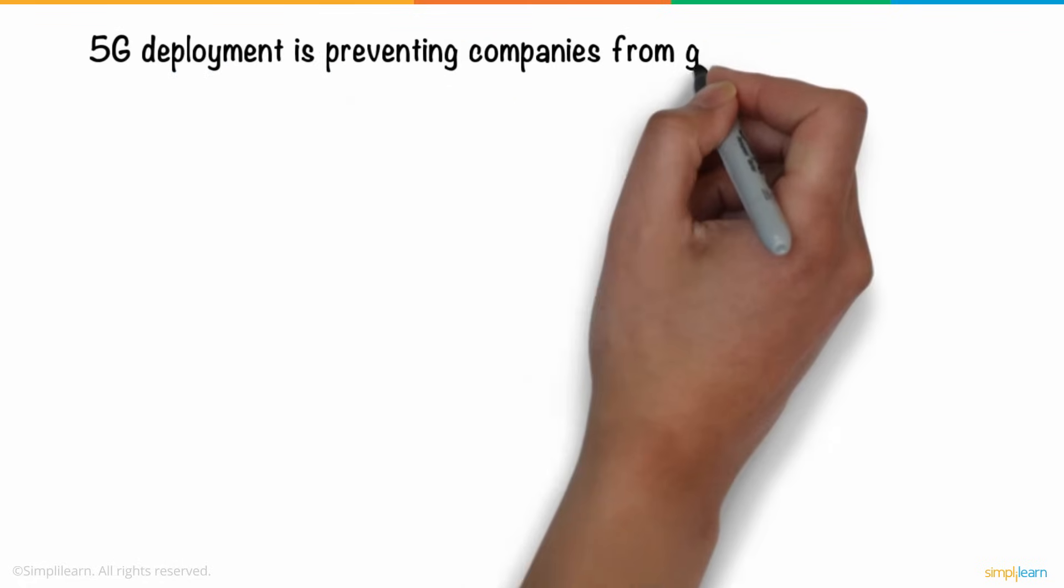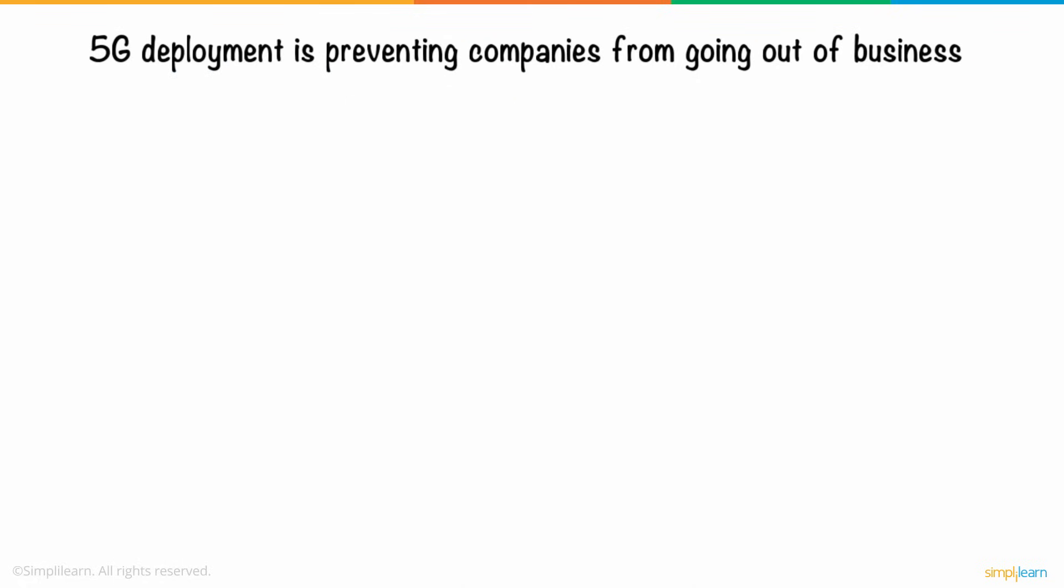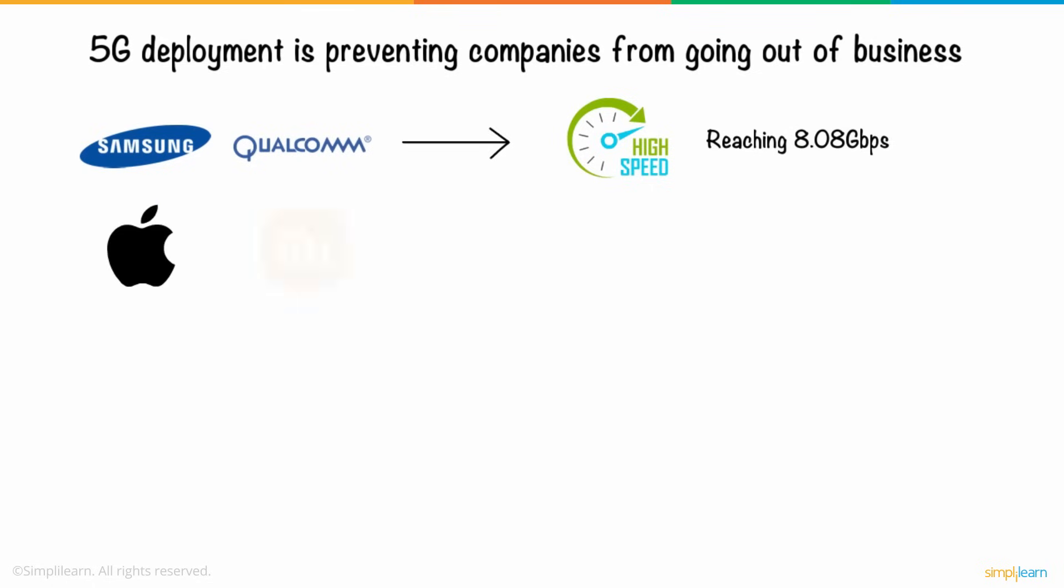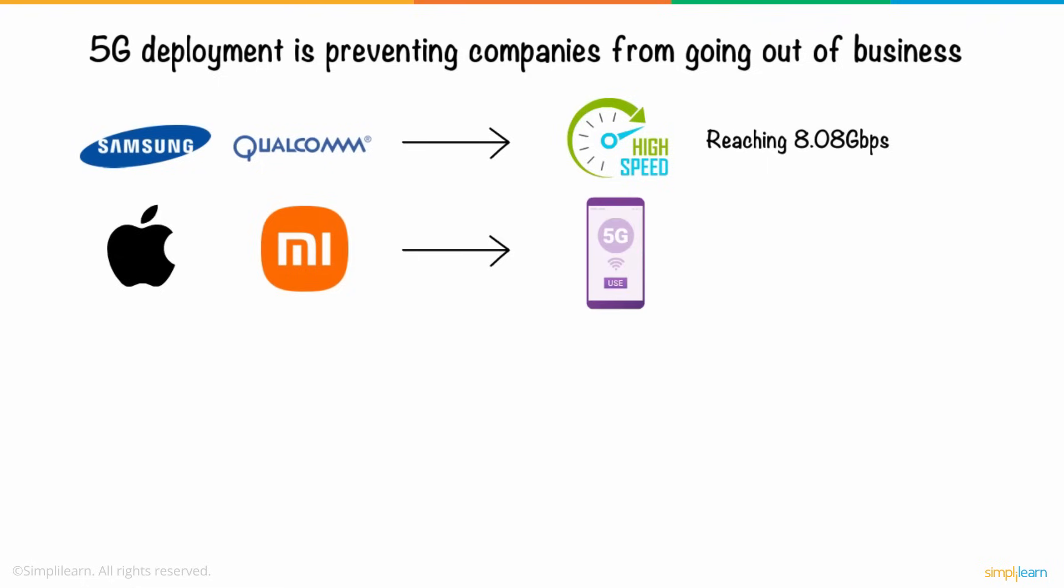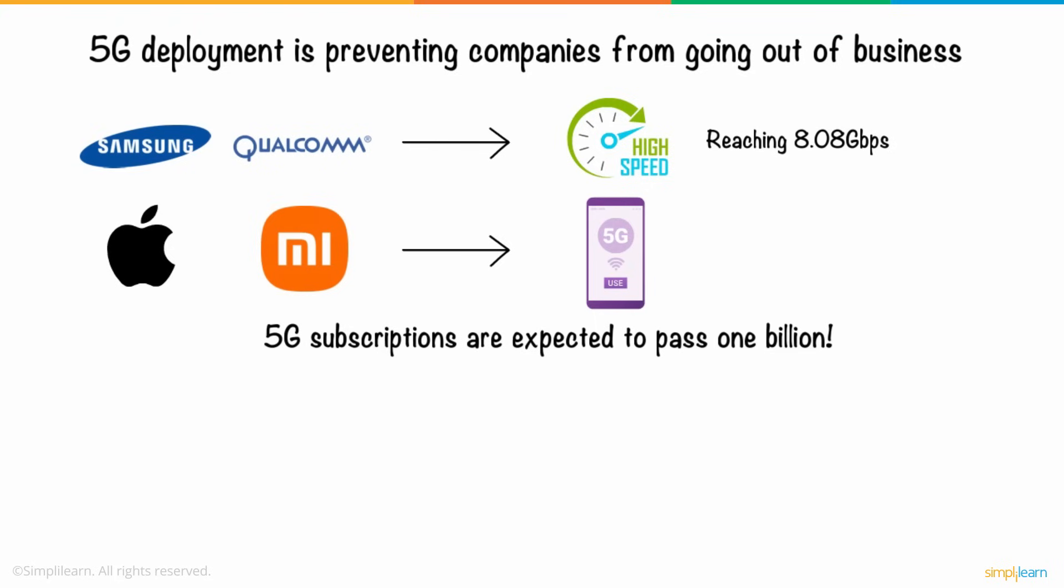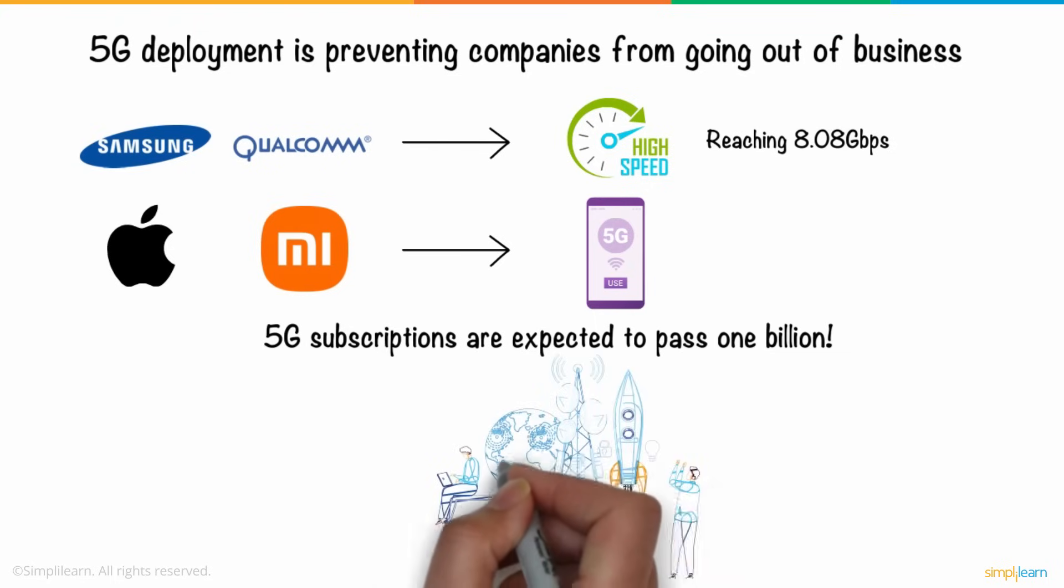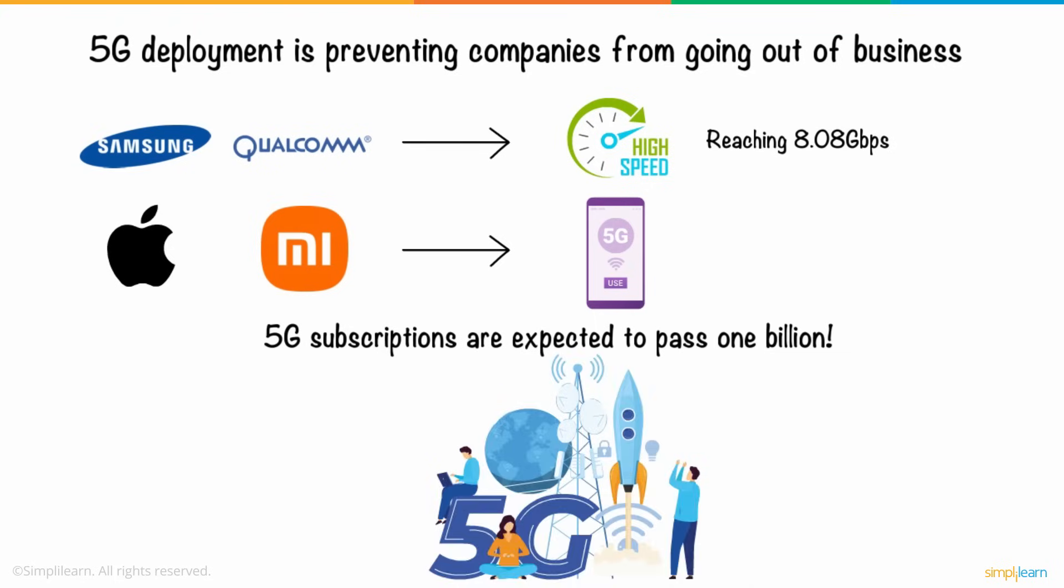5G deployment is preventing companies from going out of business. Going by the current reports, Samsung and Qualcomm have achieved yet another 5G download speed milestone, now reaching 8.08 GB per second. Companies like Apple and Xiaomi are readily rolling out 5G phones. According to Statista, in 2022, 5G subscriptions are expected to pass 1 billion. This shows how 5G will play a key role in the years to come.